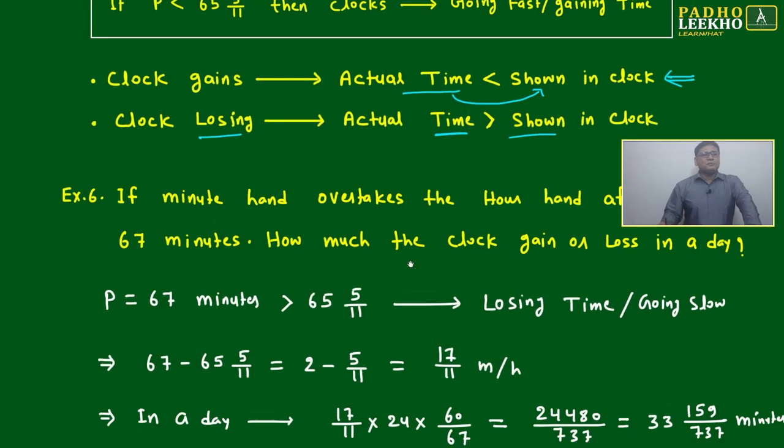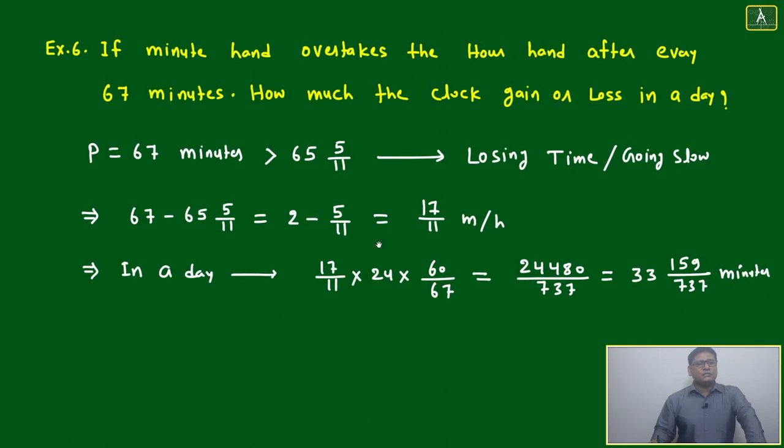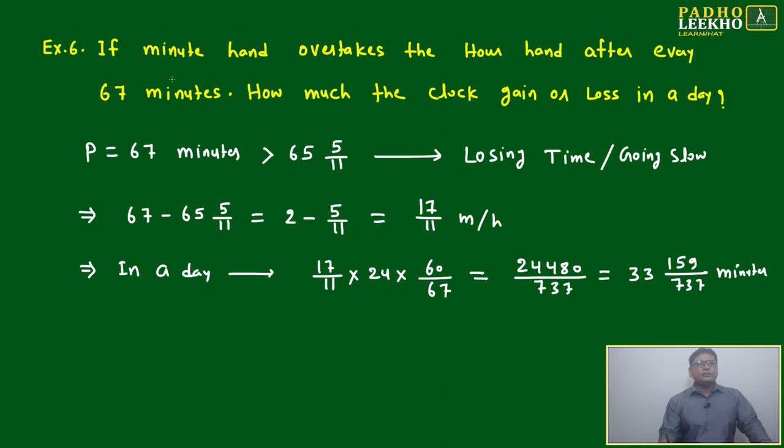Now based on that, let's go through a few example questions. Example 6: The minute hand overtakes the hour hand after every 67 minutes. What is that p value? 67. It is more than 65 into 5 by 11. Yes, it is more, which means clear cut we can say this watch or this clock is losing time or going slow. How much is it going slow? That only we have to calculate. But one thing is sure - your value is given more than 65 into 5 by 11, it will lose time. If it is less than that, it will gain time.